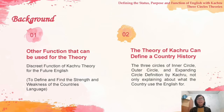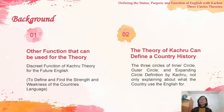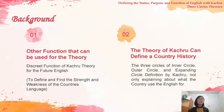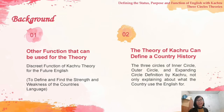Once you understand the theory, you will know which country belongs to the inner circle. For example, inner circle countries include America, Britain, New Zealand, and others. The outer circle includes countries in the Asian and African continents, and the expanding circle includes Indonesia and other countries. This is why I say Kachru's theory can help define a country's history — especially when you understand the definitions of the outer circle.